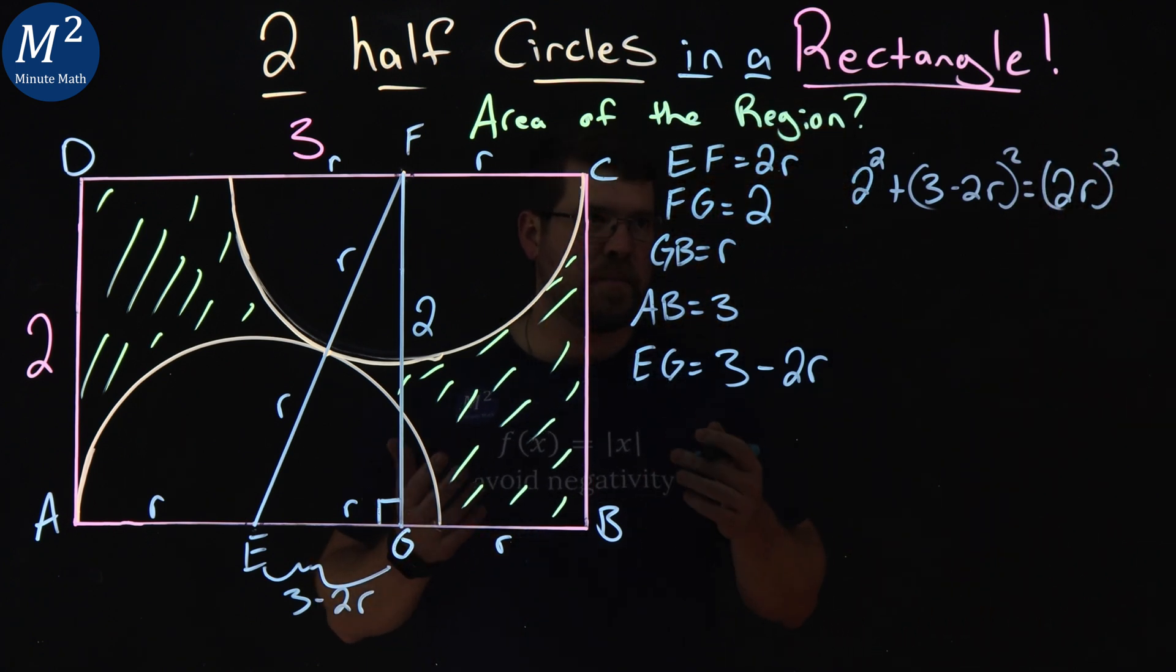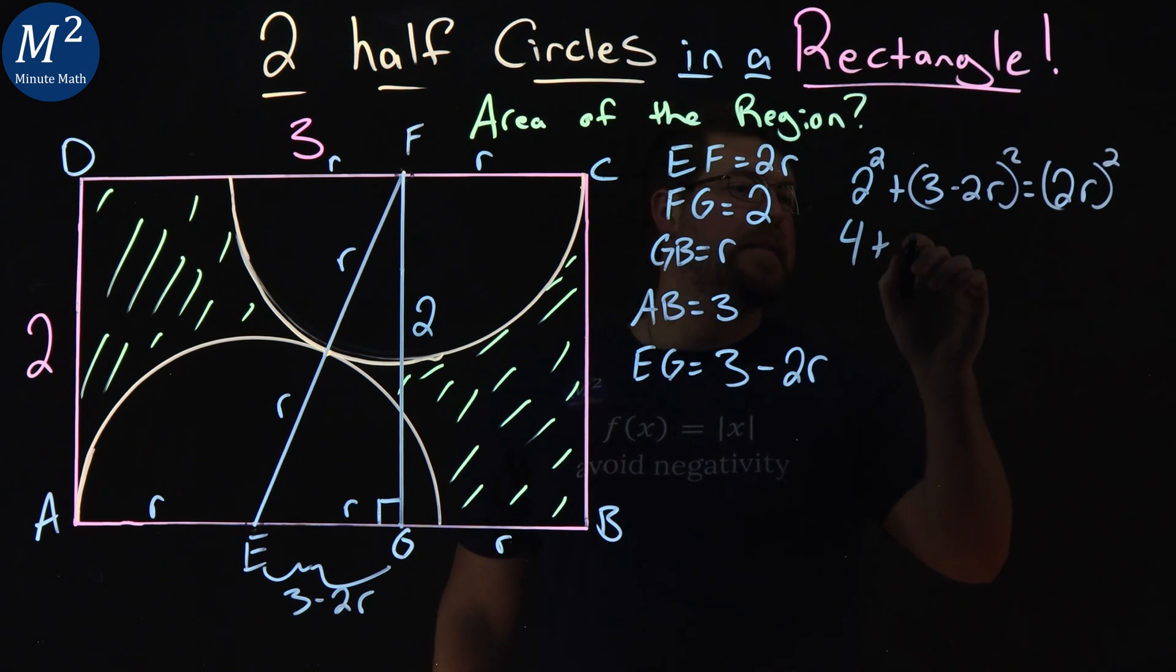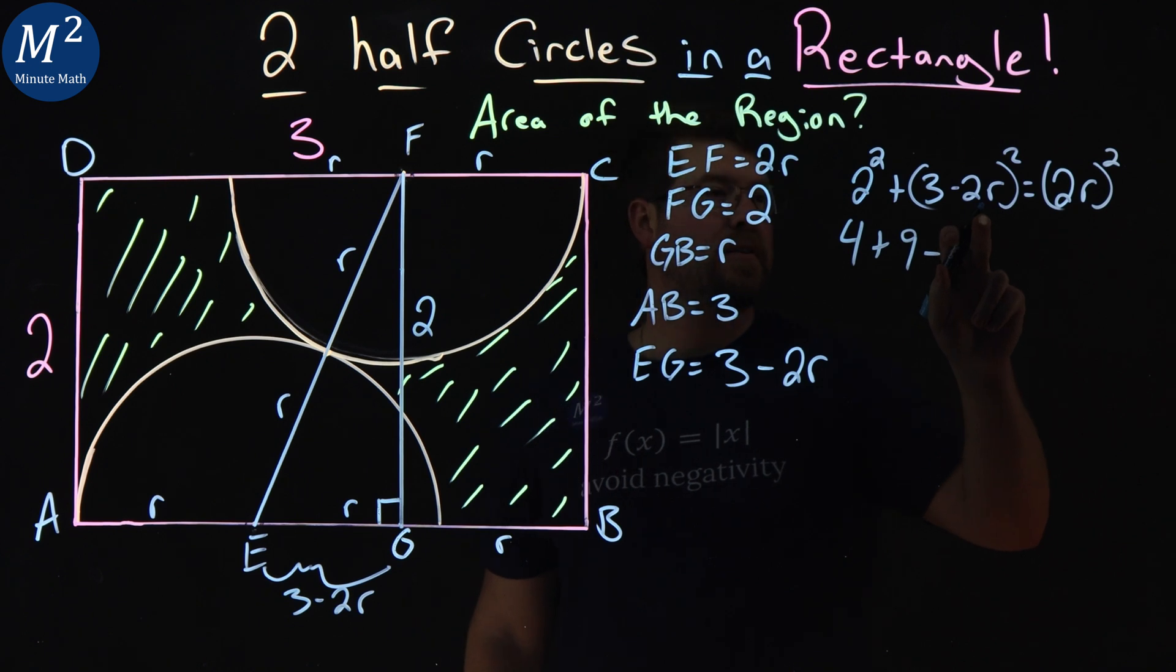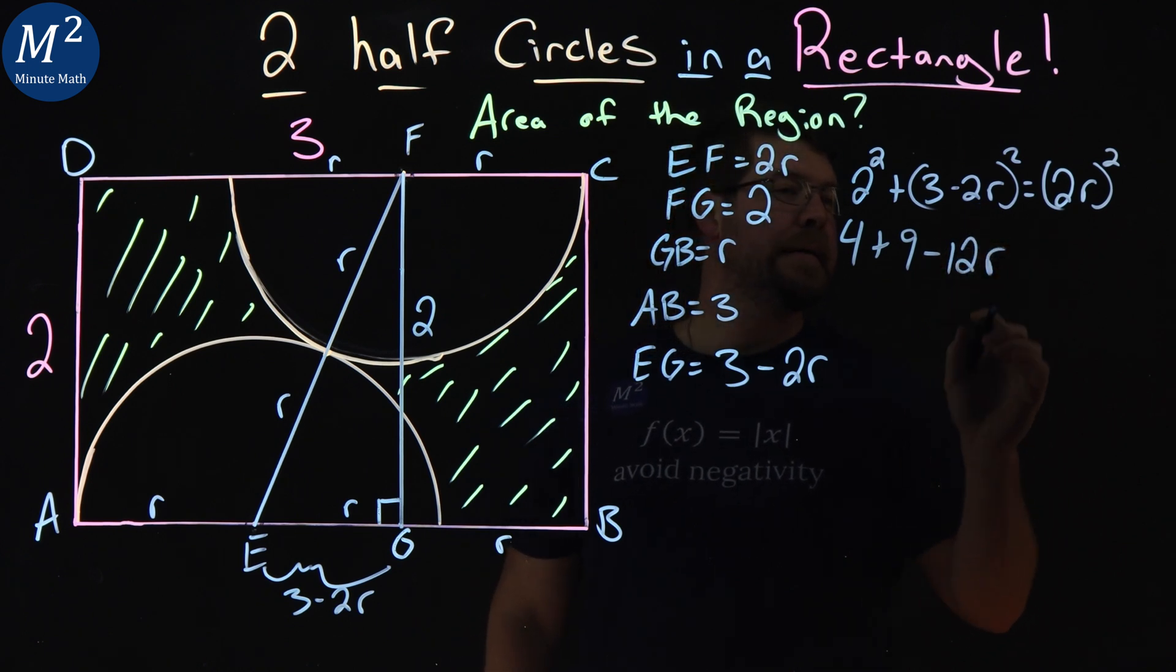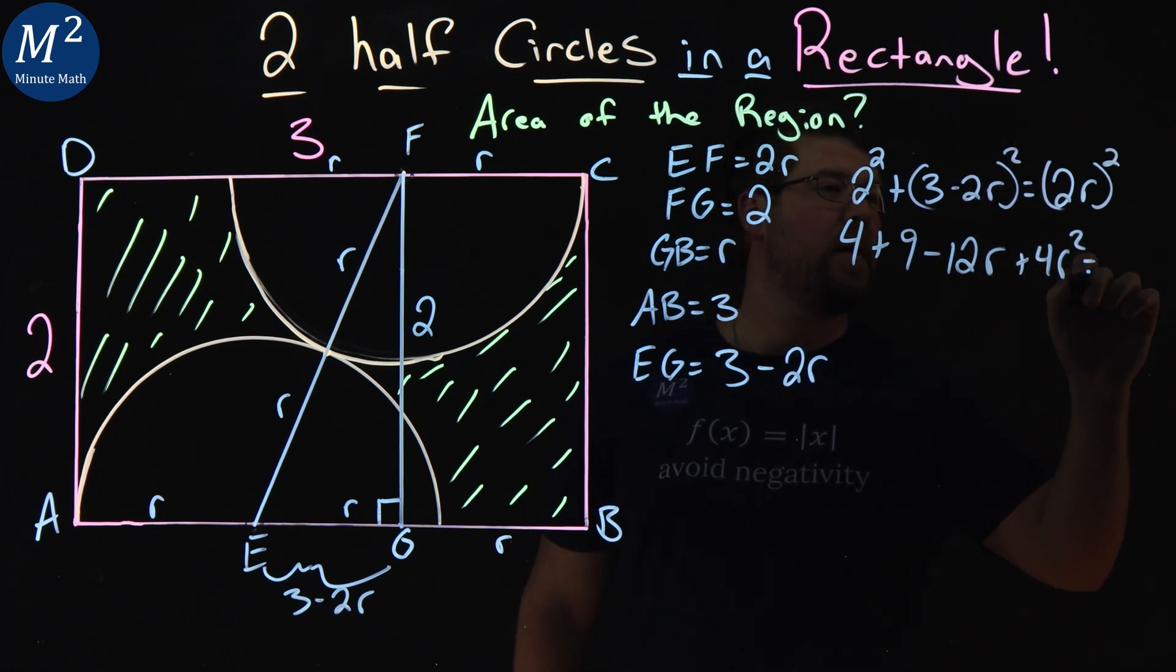And now we're going to simplify this. 2 squared is 4. 3 squared is 9 minus 3 times minus 2R is 6 minus 6R. Two of those minus 12R. And then add a 2R, negative 2R squared is a positive 4R squared. And then 2R squared is 4R squared.